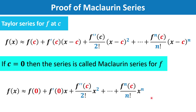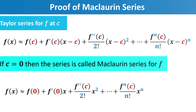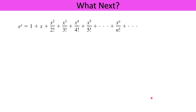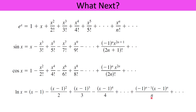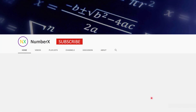When we approximate the polynomial at c equal to 0, then the series is called the Maclaurin series, which can be obtained by replacing c equal to 0 in the Taylor series. So far we have seen how to prove the Taylor and Maclaurin series approximation. In the upcoming lectures, we will learn the proof of the expansion of e to the x, sin x, cosine x, and natural log of x.